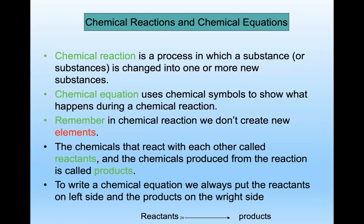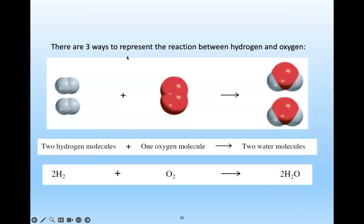Now, chemical equations: the left-hand side contains the reactants — more than one compound reacting together — and the right-hand side contains the product, which can be one or more compounds. We will look at three ways a chemical reaction can be represented.